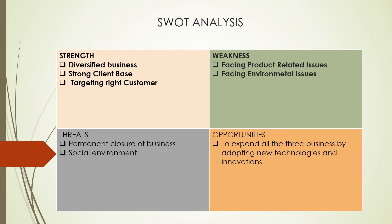The first weakness is facing product-related issues, as her products involve a lot of waste management. The second weakness is facing environmental issues. The threats are permanent closure of business, as she is facing a lot of problems related to the public, and the second threat is social environment issues. Last, the opportunity is to expand all three businesses by adopting new technologies and innovations.